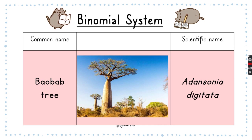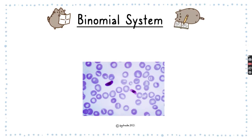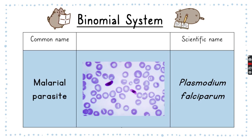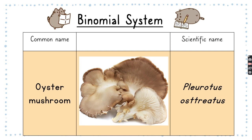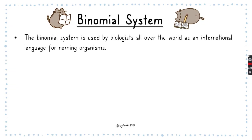Here we have a malarial parasite and its scientific name is Plasmodium falciparum. And this is the oyster mushroom, whose scientific name is Pleurotus ostreatus. Those are examples of the binomial system used by biologists all over the world as an international language for naming organisms.